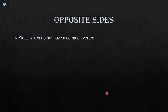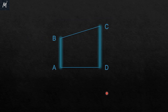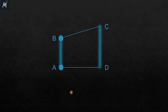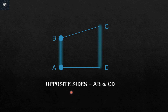The next topic is opposite sides. Opposite sides are the sides which do not have a common vertex. For example, in quadrilateral ABCD, the side opposite to AB would be the one which does not have A and B as vertices — that is CD. So AB and CD are one pair of opposite sides, and the other pair is BC and AD.